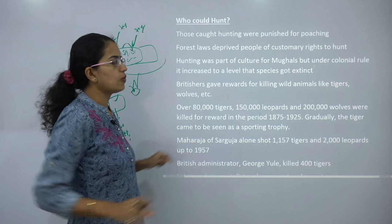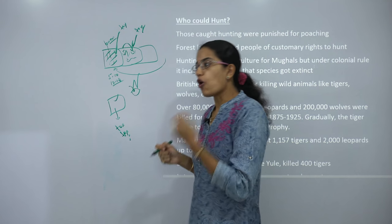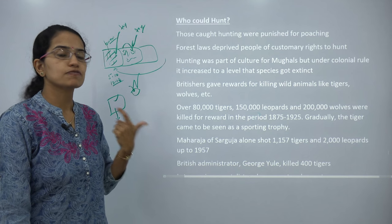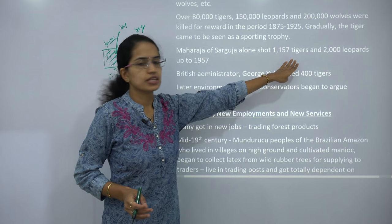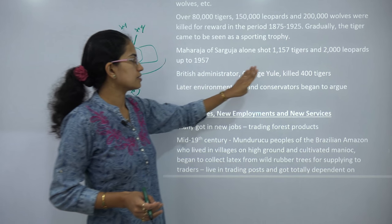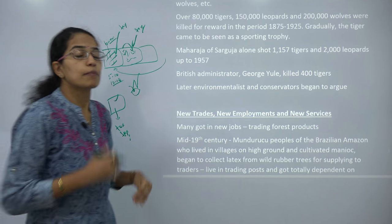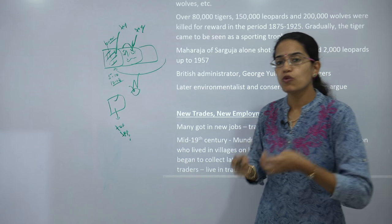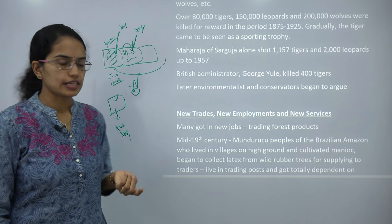Hunting became a customary right for Mughals, and later for Britishers, and it became a symbol of status. The Maharaja of Sarguja alone shot nearly more than 1,000 tigers and 2,000 leopards. Under British administration, British administrator George Yule killed nearly 400 tigers. But later on, when conservationists moved in and environmentalists were gaining momentum, they slowly went against the idea of hunting.